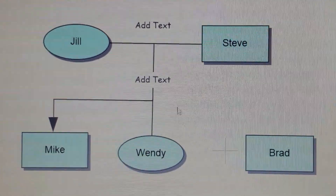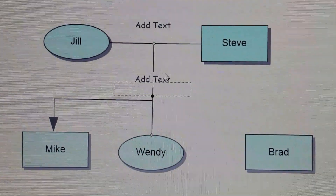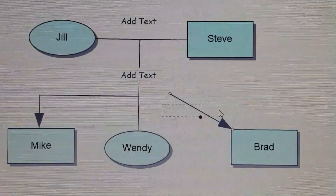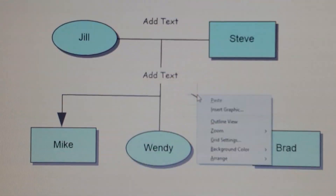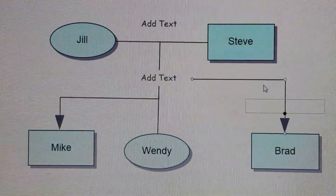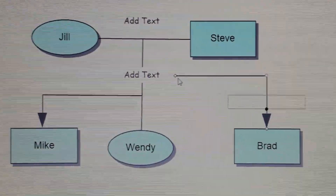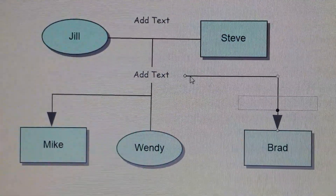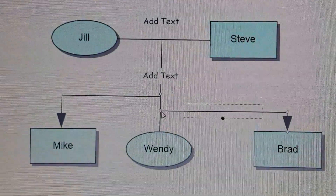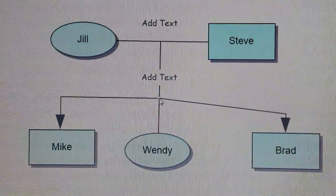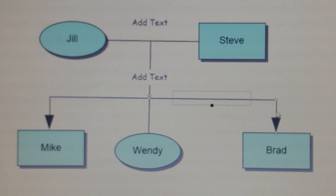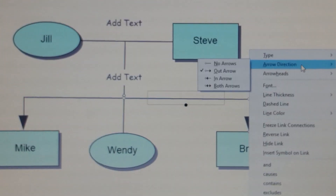Now it looks good. To finish up with Brad, click on the text box and draw another arrow to Brad. Right click on the arrow, change the type to right angle, then move the white circle anchor points to adjust the shape. Change the arrow direction to no arrows on that line as well.